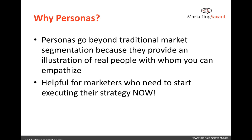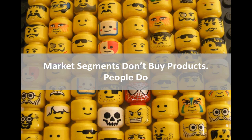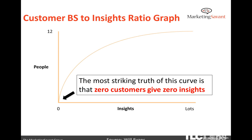Another big thing beyond empathy is that market segments don't buy products — people do. When we talk to executives who say 'I don't get the persona thing,' the point is that your go-to-market strategy and core markets aren't the ones buying — it's the people. The customer BS-to-insights ratio, as Will Evans puts it, shows it doesn't take a lot of information to get from knowing nothing to having great insights. We're talking about as few as 12 people.